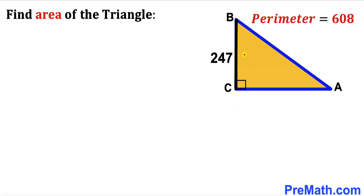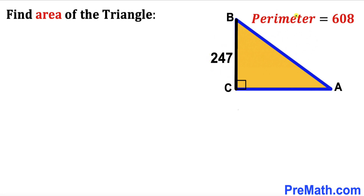Welcome to PreMath. In this video we have got a right triangle ABC such that its side length BC is 247 units, and moreover the perimeter of this triangle is 608 units. Our task is to calculate the area of this triangle ABC.